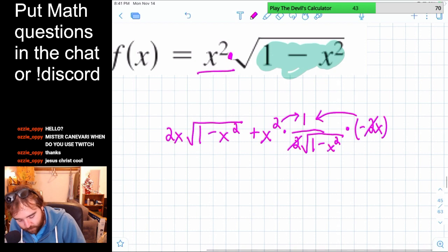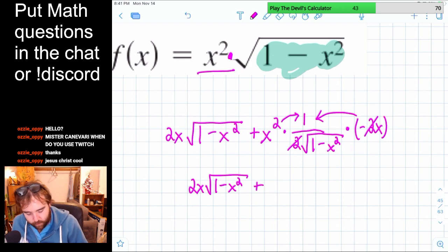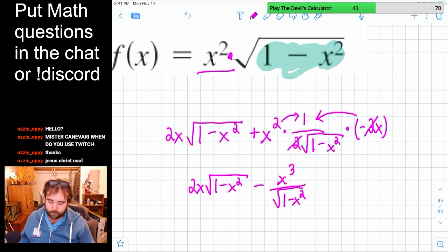And what does that leave us with? 2x square root of 1 minus x squared, or should I say because of that minus 2, that minus is still there, so minus, and then x squared times x, x cubed, over the square root of 1 minus x squared. And there we go. That's pretty good. A lot of people would suggest leaving it like that.